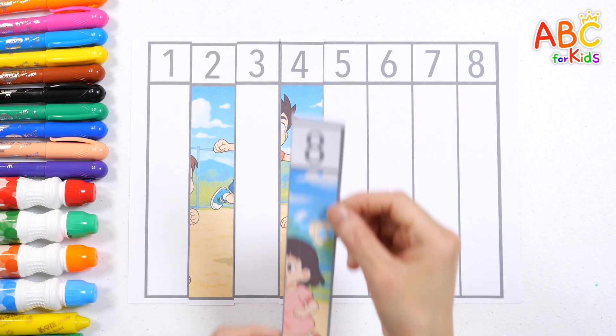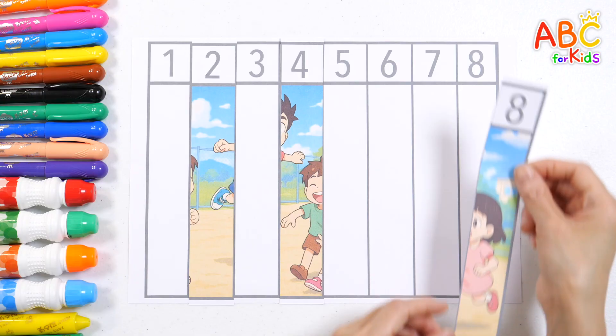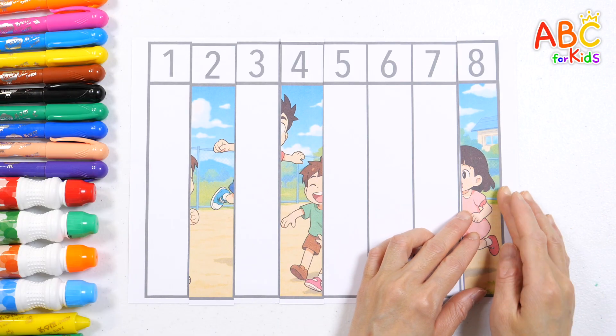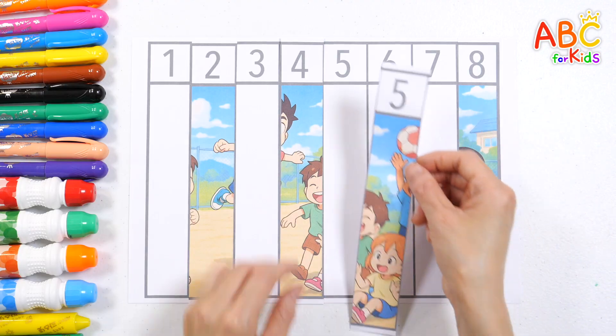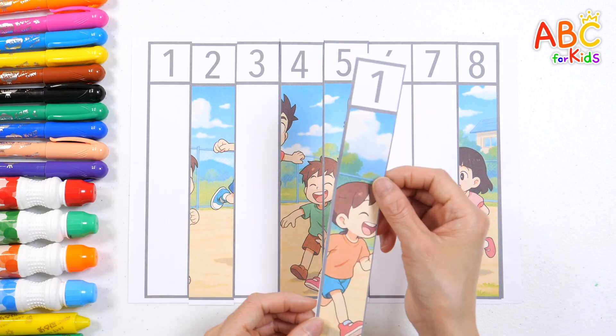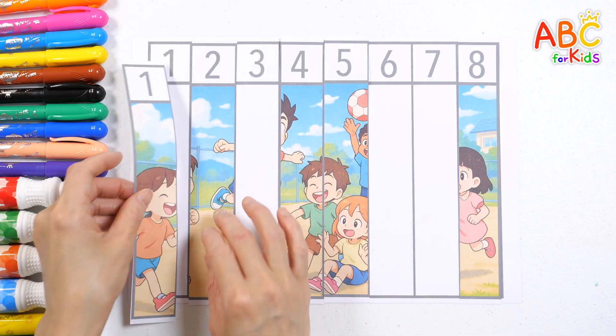We are the ABC explorers, ready for the grand adventure. Hunting letters side by side, from A to Z, let's take the ride. Five. Guess what picture will be completed?